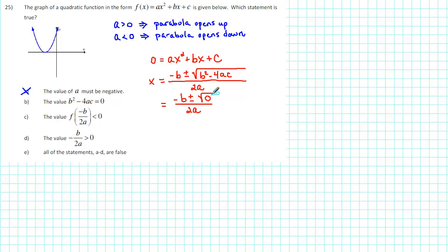Well, the square root of 0 is 0, and when we add or subtract 0 from -b, we just get -b. So this expression simplifies to -b over 2a.